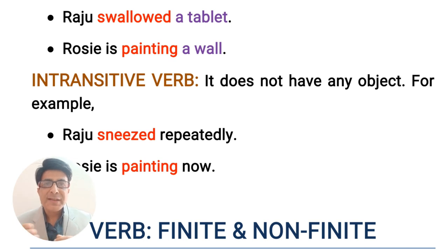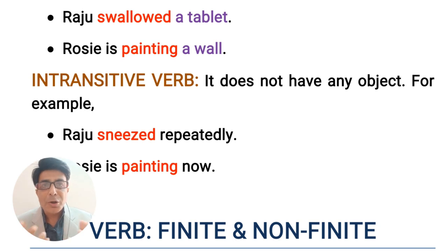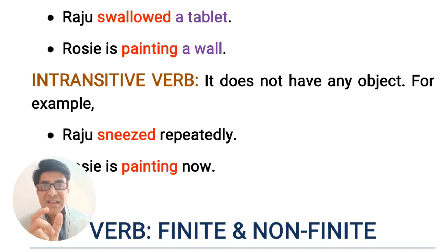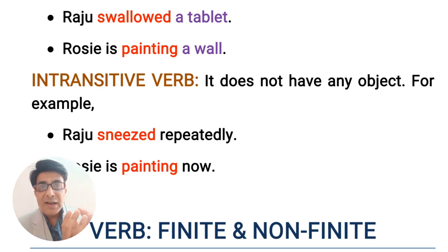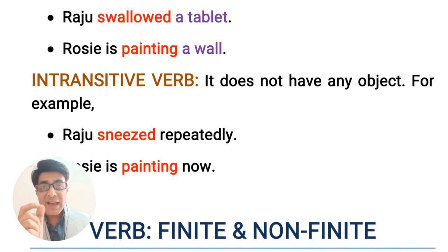Just opposite to transitive verb, we have intransitive verb. Intransitive is the antonym of transitive. The intransitive verb does not take any object; you do not find any object after such verbs. For example, 'Raju sneezed repeatedly.' Here, the subject is Raju and the verb is sneezed. After this verb, 'repeatedly' is a time-indicating word, which is not an object. So the verb sneeze is not followed by any object — that's why this is an intransitive verb.